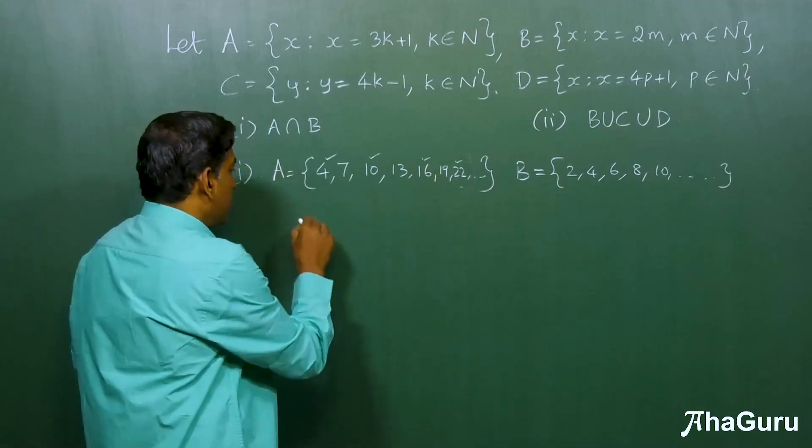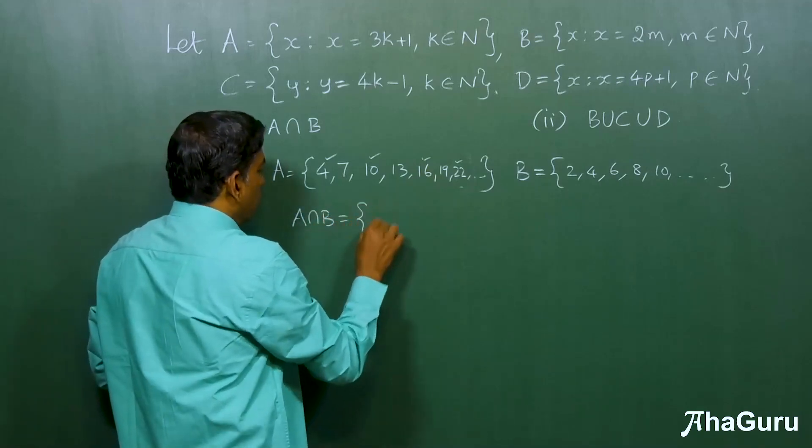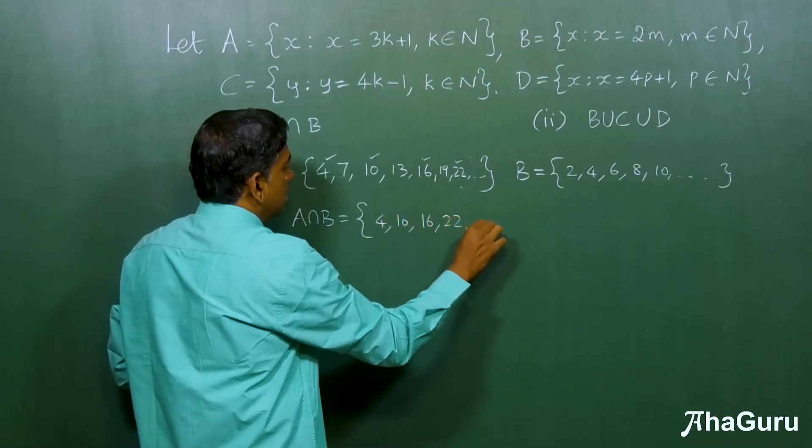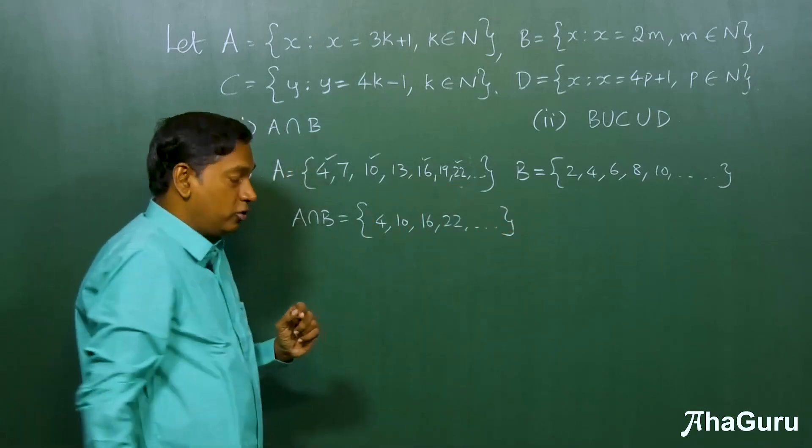So, A intersection B would be 4, 10, 16, 22 dot dot dot dot.